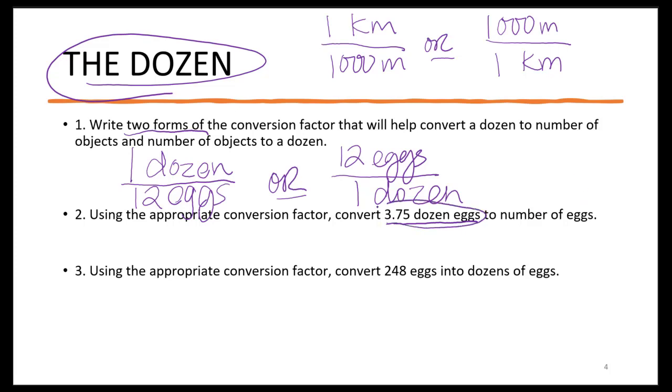Well we always start with what we're given, so let's do 3.75 dozen. Now which conversion factor would I use? Would I use 1 dozen over 12 eggs, or 12 eggs over 1 dozen? Well I have to cancel out my units, so my dozen would need to be on the bottom. I would say that 12 eggs on top, 1 dozen on the bottom. See how dozen and dozen cancels out? So 3.75 times 12, we would have 45 eggs.